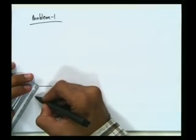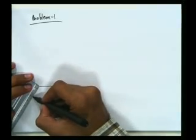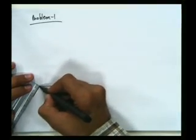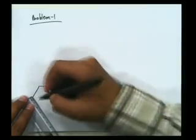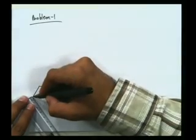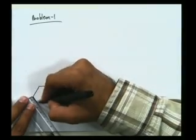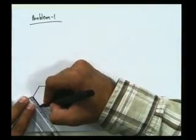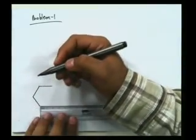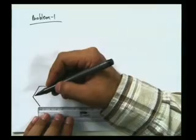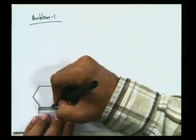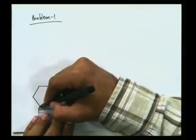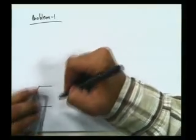Straight away saving time so that we can solve more problems. I'm sure that by now you all know how to draw a hexagon, so the top view of a hexagonal prism is always a hexagon.